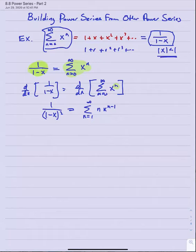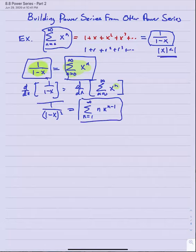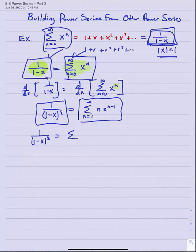So here's the simple idea: I've taken a known power series for a simple function and derived the power series for a different function by simply taking the derivative of the power series for one over one minus x. Now I have the power series for the function one over one minus x squared, which is n equals one to infinity n·x to the n minus one.